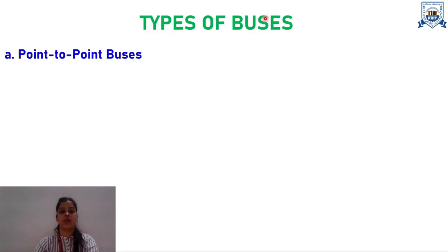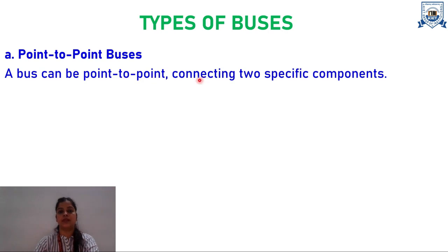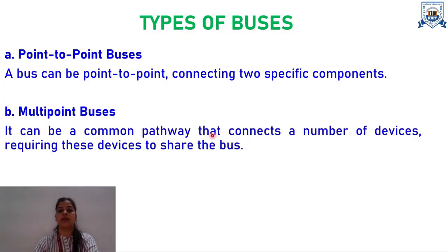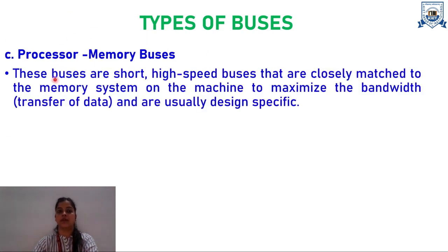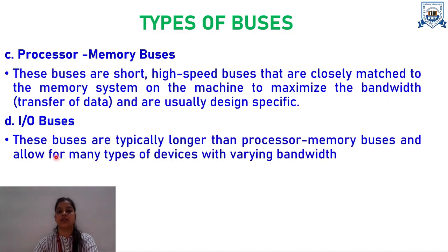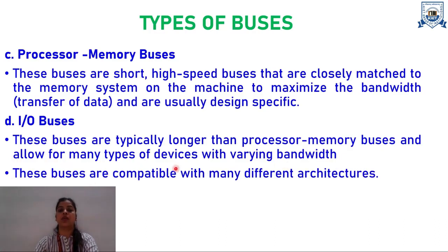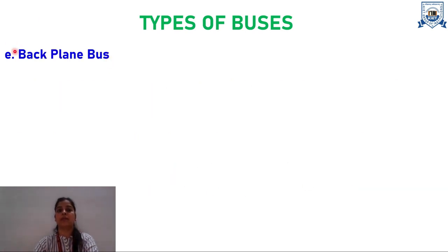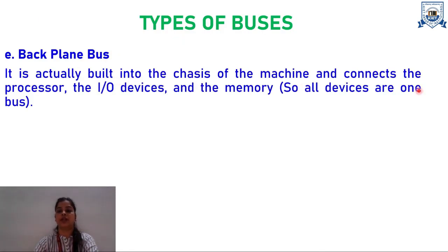Let's discuss the different types of buses. First, point-to-point buses connect two specific components. Second, multipoint buses serve as a common pathway connecting a number of devices that share the bus. Third, processor-memory buses are short, high-speed buses closely matched to the memory system to maximize bandwidth. These are usually design-specific. Fourth, IO buses are typically longer than processor-memory buses and allow for many types of devices with varying bandwidth, and are compatible with different architectures. Fifth, the backplane bus is built into the chassis of the machine and connects the processor, IO devices, and memory — all devices share a single bus.